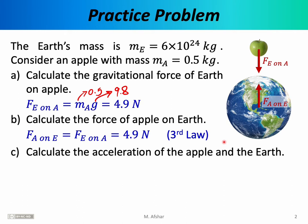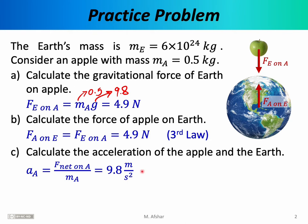We know how to calculate acceleration — that's Newton's second law: acceleration equals force divided by mass. For the apple, the net force is 4.9 newtons. Dividing by the apple's mass of 0.5 kilograms gives an acceleration of 9.8 meters per second squared. This is exactly what Galileo was telling us: objects near Earth's surface fall with an acceleration of 9.8 meters per second squared.